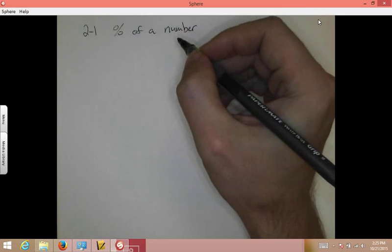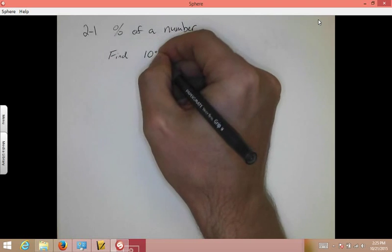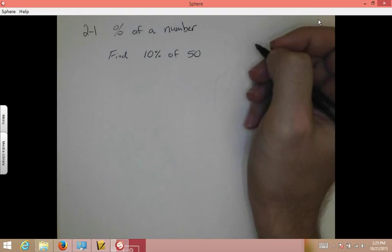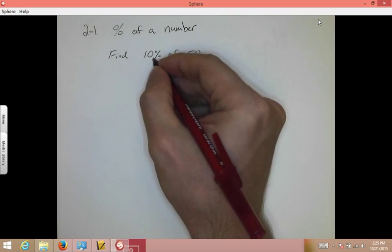For example, suppose a question said, find 10% of 50. Well, to do this question, first you're going to take this 10% and you're going to convert this into decimal form.